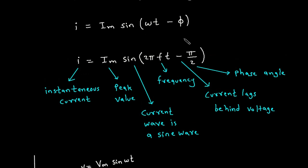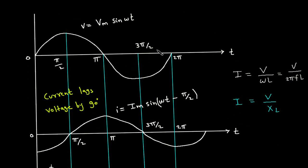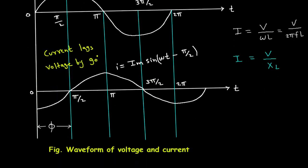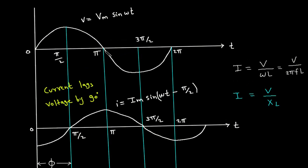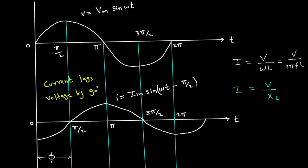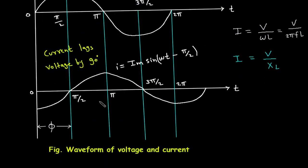We can compare these two equations. This is the waveform of voltage, where V equals Vm sin(ωt), and this is the waveform of current, equal to Im sin(ωt − π/2). The zero crossover point of voltage is here, and the zero crossover point of current is here. The difference between the two waveforms is represented by φ, which is called the phase difference.